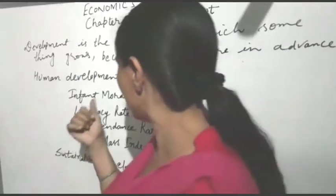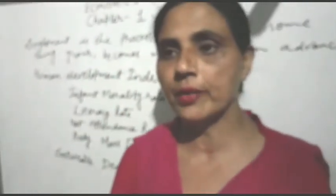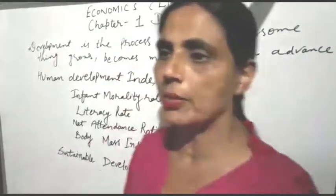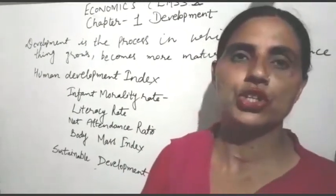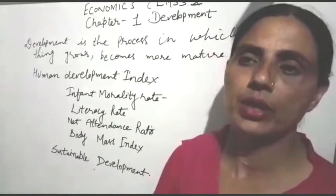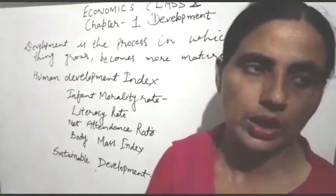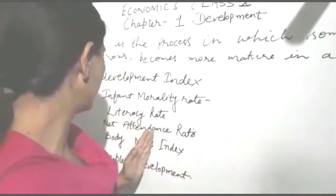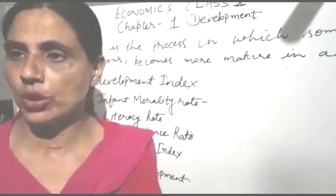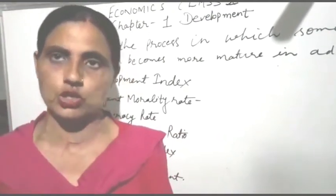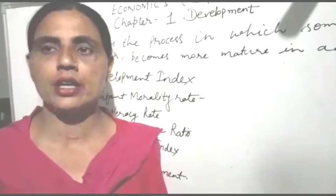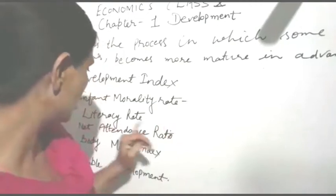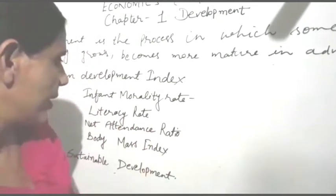Infant mortality rate is the number of children that die before the age of one year as a proportion of 1,000 live births in a particular area. Net attendance ratio is the total number of children in the age group of 6 to 10 attending school as a percentage of the total number of children in the same age group.